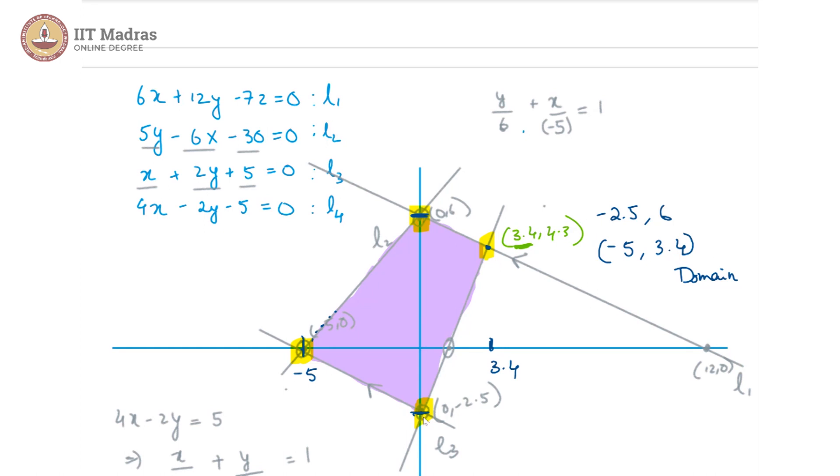Likewise, -2.5 is not a y value inside the range and 6 is also not a y value inside the range. So our range is (-2.5, 6).